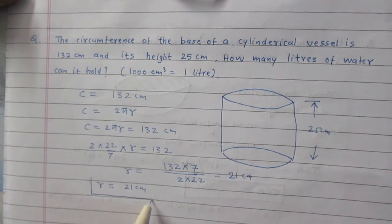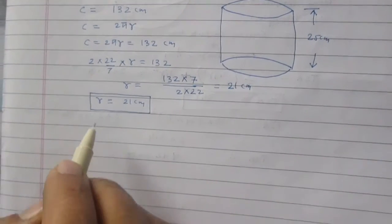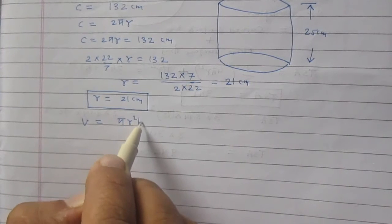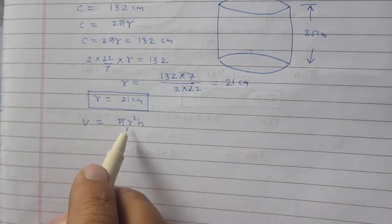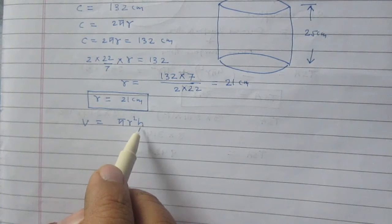Now we are to find the volume of this cylinder. Volume of the cylinder is πr²h where r stands for the radius of the base of the cylinder and h is for height of the cylinder.